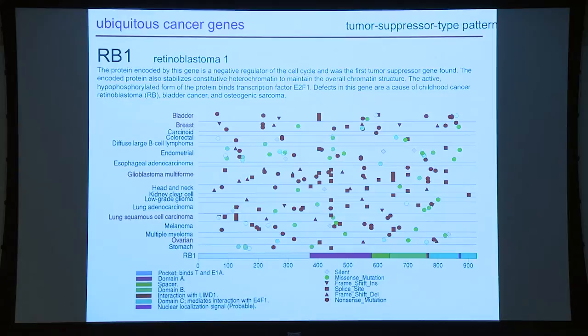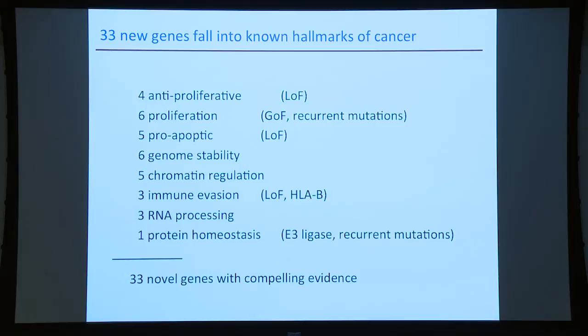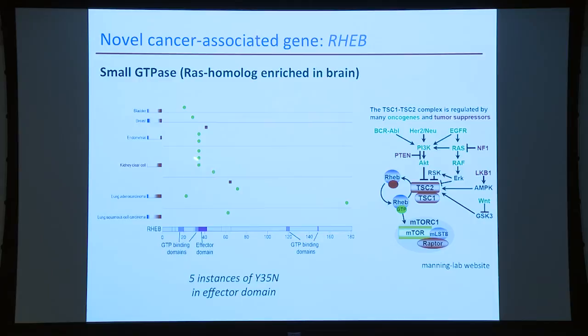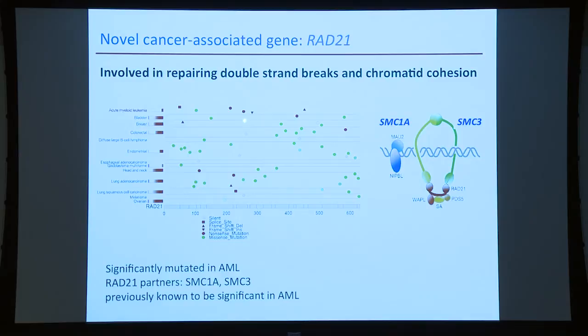Example genes: NRAS shows clear hotspots and is a known oncogene in multiple tumor types. Tumor suppressor genes show nonsense, frameshift, or splice-site mutations scattered across the gene. APC is another tumor suppressor with a very different mutation pattern in colorectal cancer versus other tumor types. Among the 33 novel genes we identified, we found RRAS2 with a hotspot in the effector domain downstream in the MAP kinase pathway — consistent with being a cancer gene. We also found RAD21 as significant in AML; this protein binds other proteins previously identified as significant in cancer, related to chromatid cohesion and double-strand breaks.